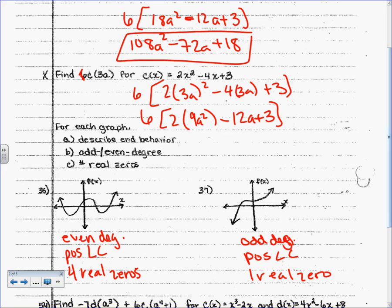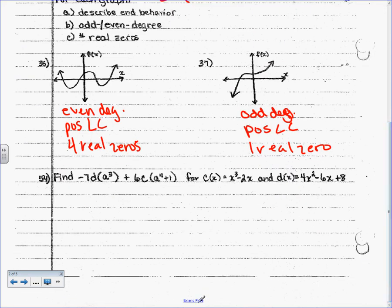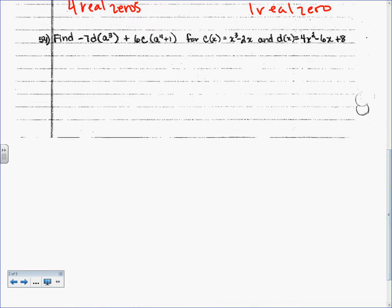So now we're going to do the bottom one. For this one, I need you to tell yourself — I need to hear you say it: I can FOIL, I can substitute, I can combine like terms. That's all we're going to do. This one says negative 7 times D of A cubed. That means we're dealing with the D function — instead of all the x's, we're going to plug in A cubed. I like to break it down — I'm going to do the left side of the question now, and I'll do the right side in a second.